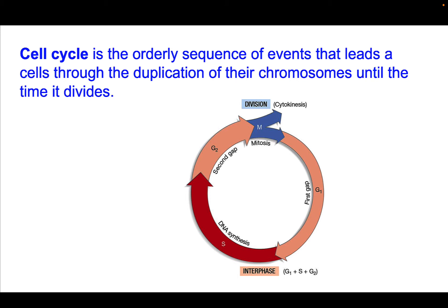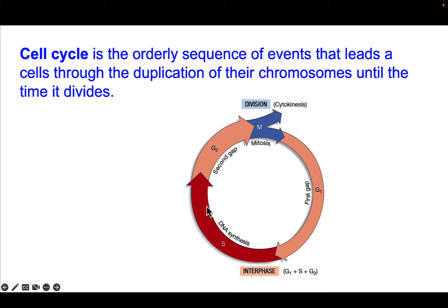Scientists knew for a long time about the existence of M phase because they could see that chromosomes physically condensed, and they could see material separate into daughter cells. But they couldn't really see what was happening in this other phase of the cell cycle. So they labeled this phase interphase — that's G1, S, and G2. But eventually, through different technologies, scientists were able to observe what was happening in S phase.